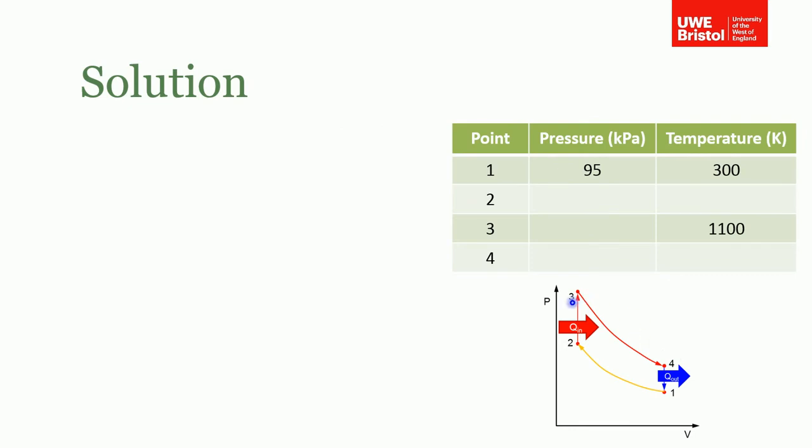The best way to start this problem is draw a sketch so you can see what you're doing and help visualize the problem. Then I also recommended that you draw a table for this problem, so you've got points one, two, three, four, the pressures at each point and the temperatures. You can populate this. You're given the initial pressure and initial temperature from the question. You're told temperature at point three, that's where the peak temperature occurs, but you don't know anything else.